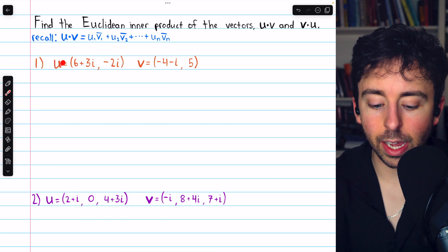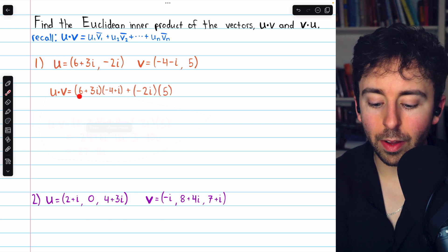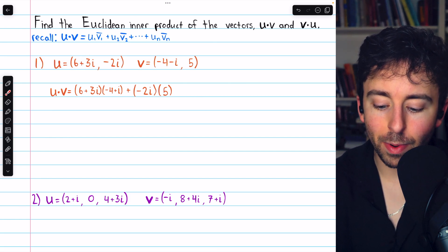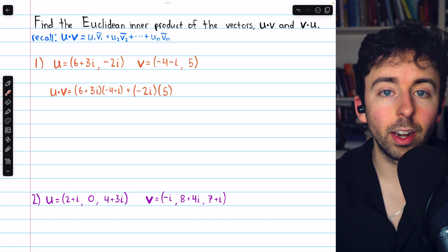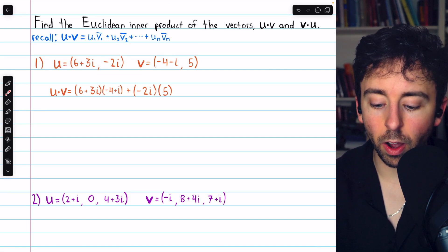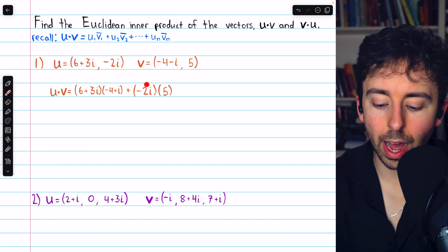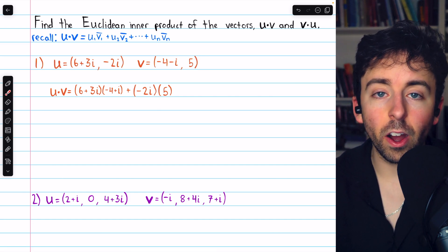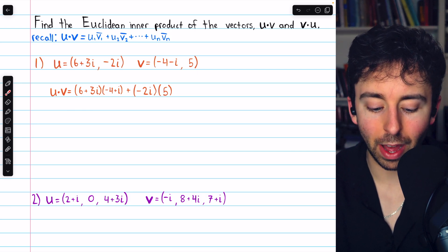So to see this in action, let's begin with problem one, and we'll do u dot v. And by definition, it looks like this. We take the first component of u and multiply it by the conjugate of the first component of v. The conjugate just switches the sign of the imaginary part, so the conjugate of negative four minus i is negative four plus i. Then we take the next component of u, negative two i, and multiply it by the conjugate of the next component of v. The conjugate of a real number is just that real number. It doesn't change, so we're multiplying by five.